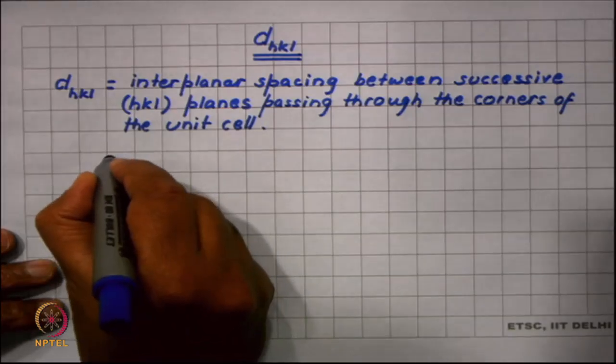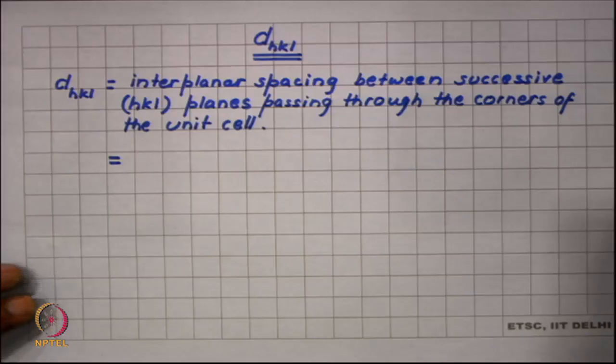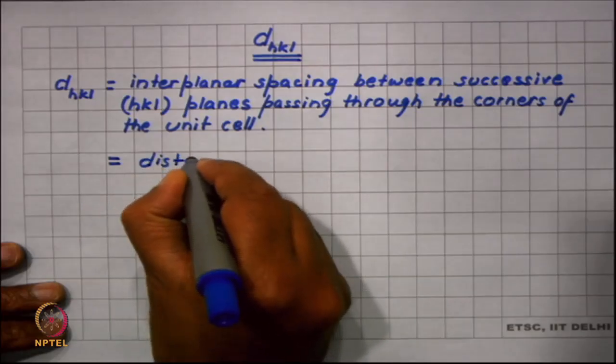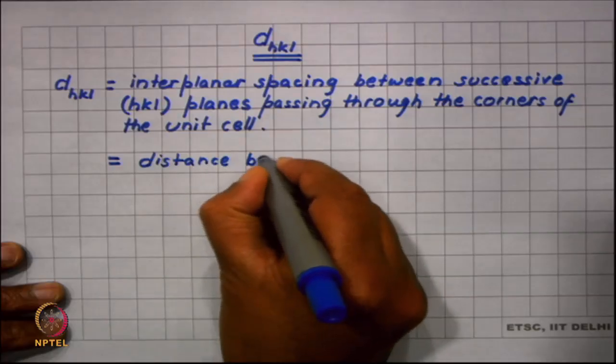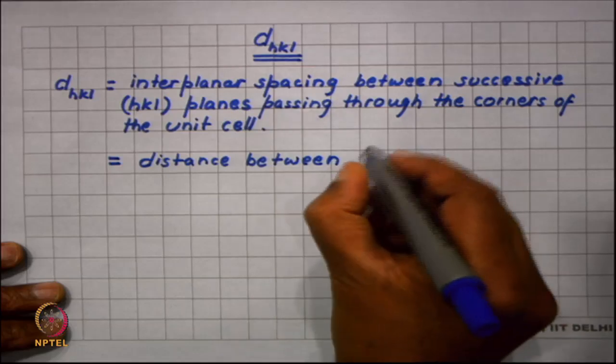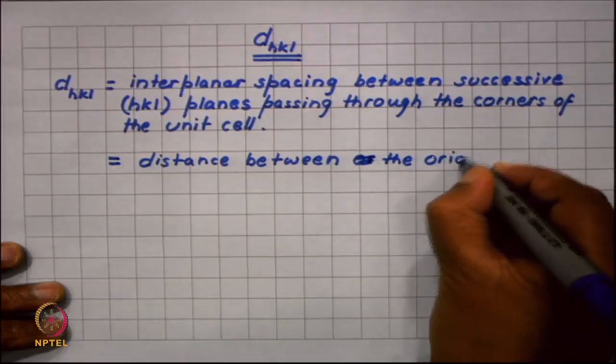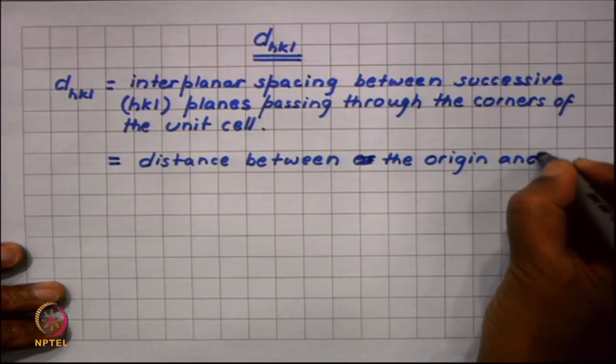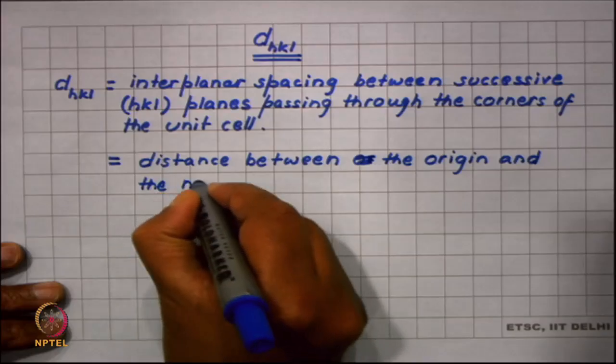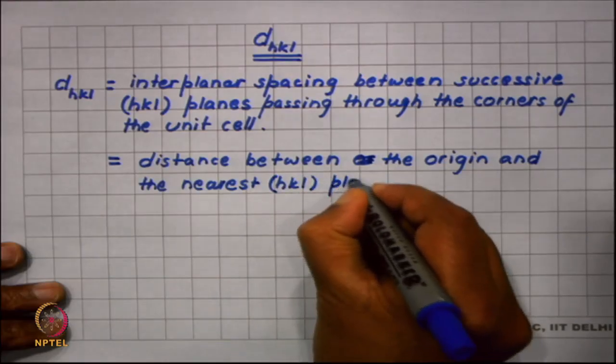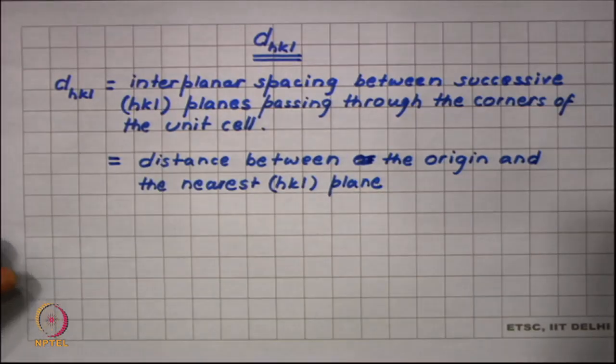Another way of looking at it is the same distance will also be equal to the distance between the origin and the nearest HKL plane. Once we see some examples it will become clear.